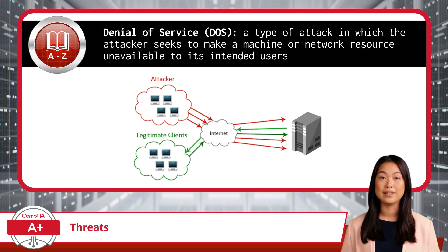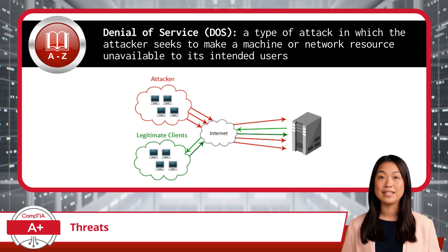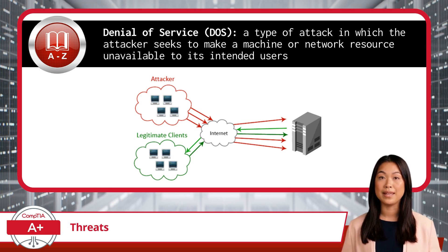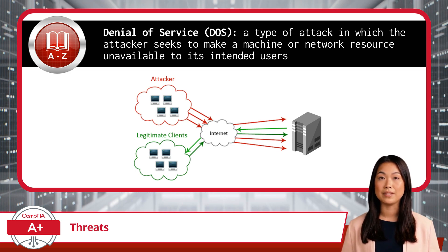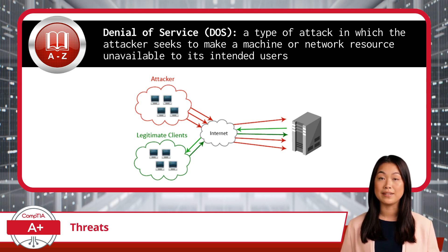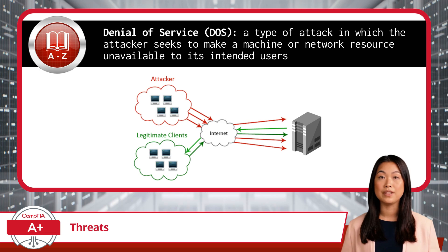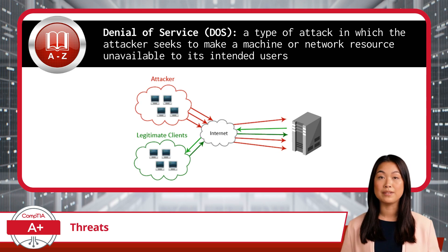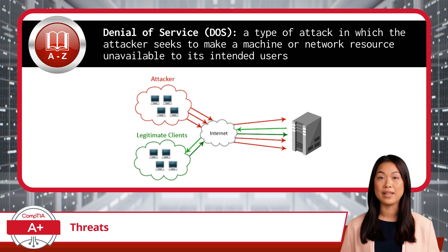Let's start with a denial-of-service, or DOS attack. This is a type of attack in which the attacker seeks to make a machine or network resource unavailable to its intended users. There are many ways a DOS attack can be launched, including causing a power outage, a hardware failure, or a disruption to network connectivity. But the most common scenario involves bombarding a company's web server with so much traffic that it becomes unavailable to the general public — the attacker overwhelms the server by flooding it with requests for resources.